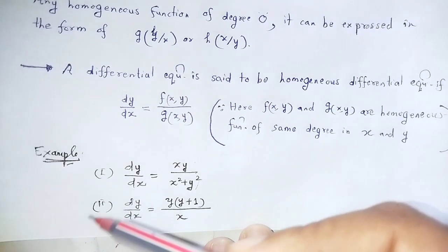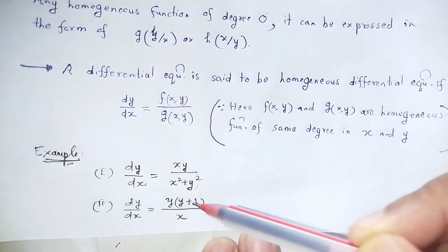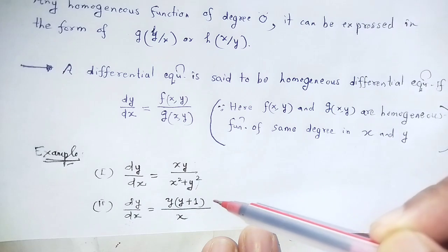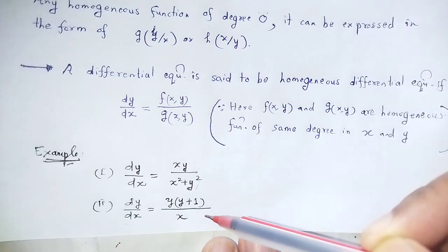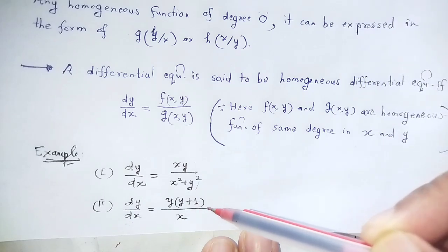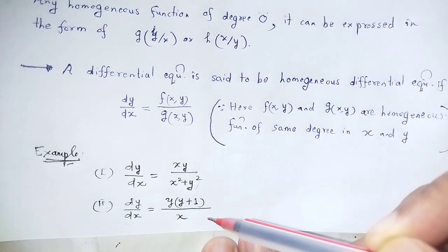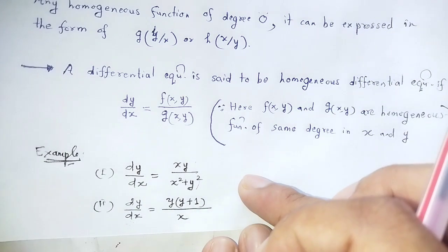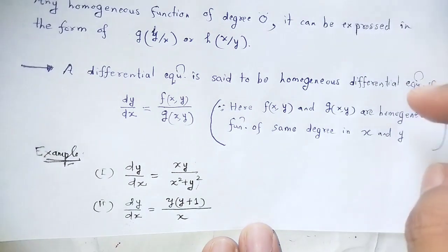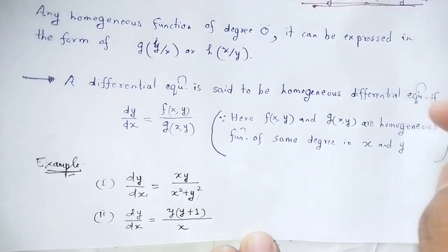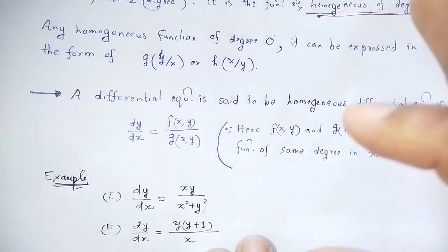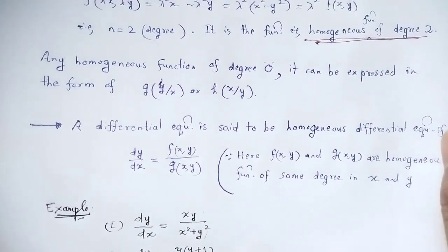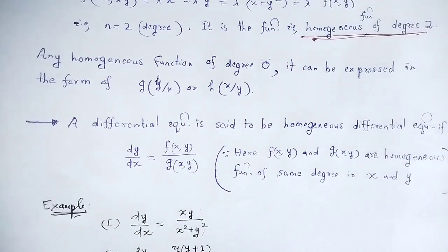Example number 2: dy/dx = y(y+1)/x. This is the same degree and is a homogeneous function — a homogeneous differential equation. We should be familiar with identifying homogeneous differential equations.